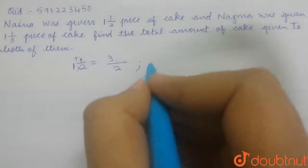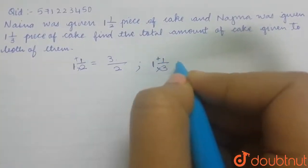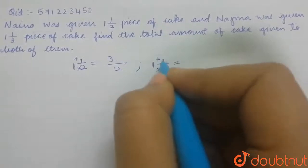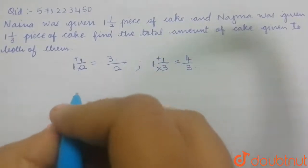The same thing goes with 1 1/3. Here multiplication and addition. 1 times 3 is 3, 3 plus 1 is 4. This becomes 4/3. We are supposed to find out the total amount, the sum of 3/2 and 4/3.